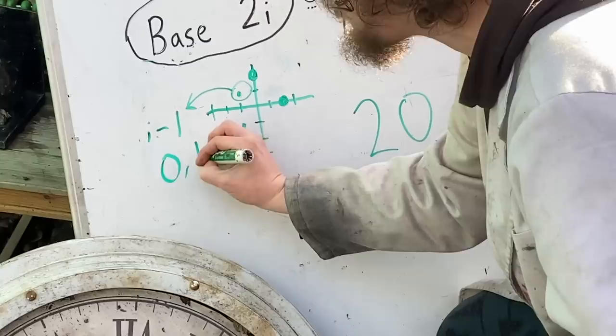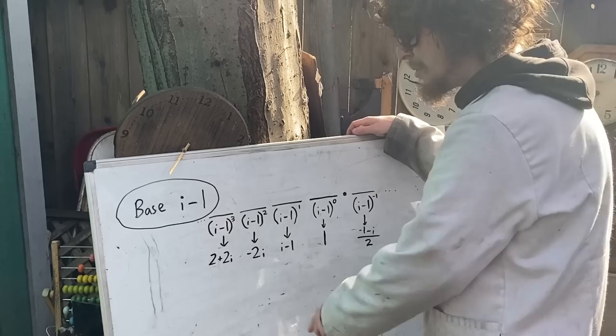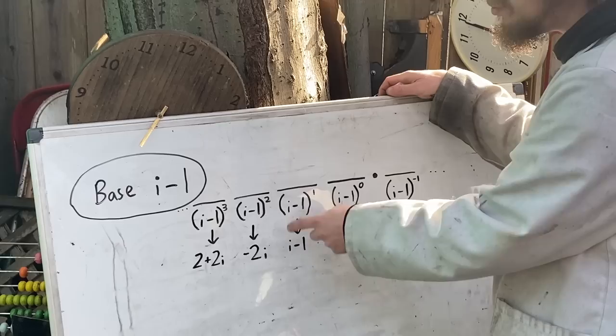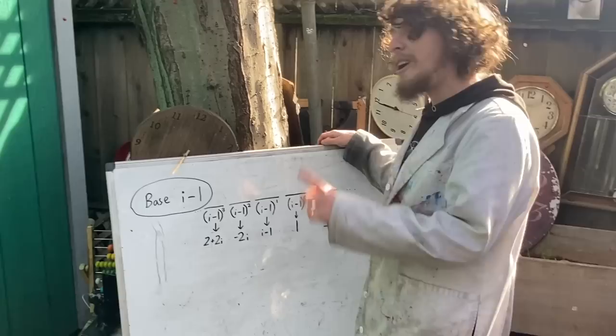In base i minus 1, these places represent slightly stranger complex numbers, sometimes combo ones. The zeroth power spot still makes there be a ones place, but the first power spot makes there be an i minus ones place. That's how many i minus ones you want. And then there's a negative 2i's place, then a 2 plus 2i's place. But even though these look pretty strange, we are able to combine them into any complex number.